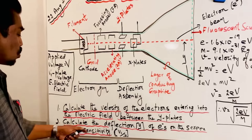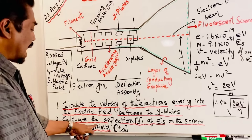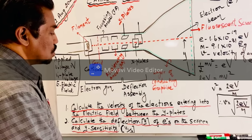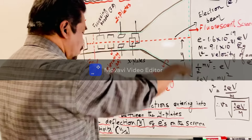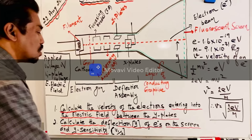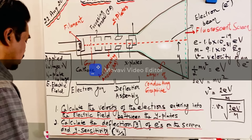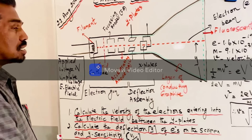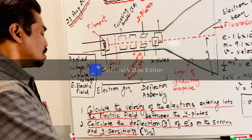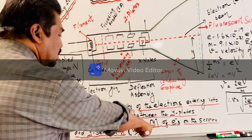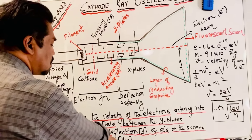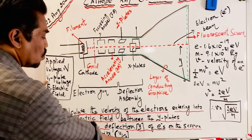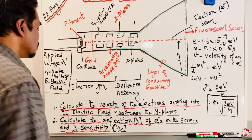Next, we calculate the deflection Y — the deflection of electrons on the screen — and also the Y sensitivity, which is simply V1 over Y.